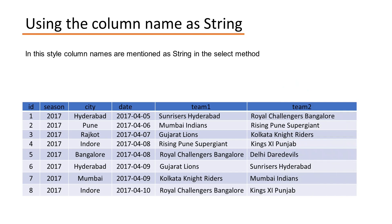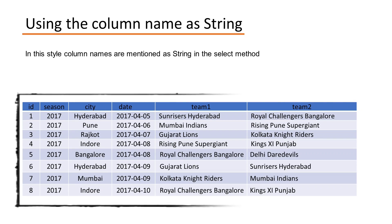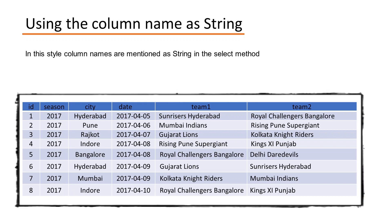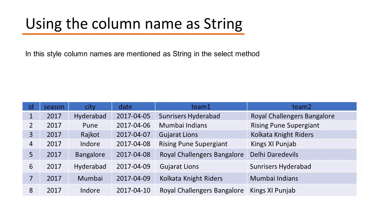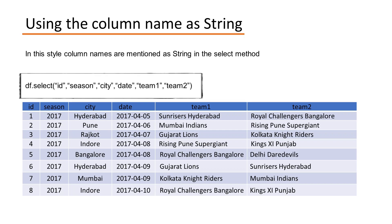The first way is column as a string. In this style, column names are mentioned as a string in the SELECT method as an argument. For example, let's say you have a DataFrame with the column names: id, season, city, date, team1, and team2. Your SELECT statement will look like: df.select() followed by your column names.